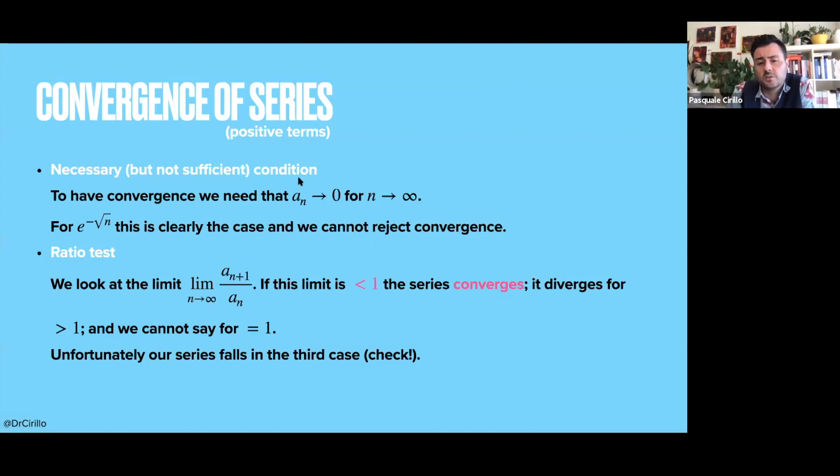The condition is just to check what happens to the quantity a_n, that in our case is e to the power minus square root of n, when n goes to infinity. If this quantity tends to zero, then you have that you cannot reject convergence. If it does not happen, so it is not convergent towards zero, then you can say, okay, there is no convergence. Okay, but it's very important that you understand that this is a necessary but not sufficient condition. So if you cannot reject convergence, it does not mean that it is guaranteed. You still have to test it.